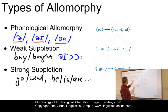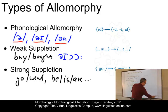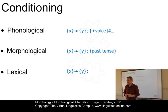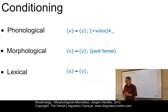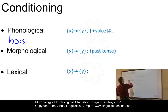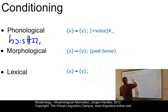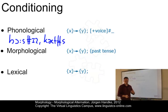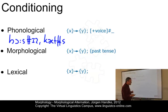In addition to these main types, we can define various conditions under which a particular allomorph is selected. For example, phonological conditioning, where the sound structure conditions the choice of allomorph. In English we have things like 'horse' / 'horses' versus 'cat' / 'cats'. The choice of the plural morph depends on a phonological rule.